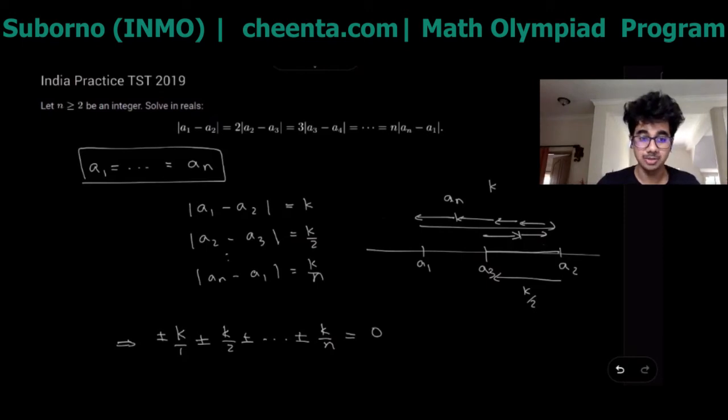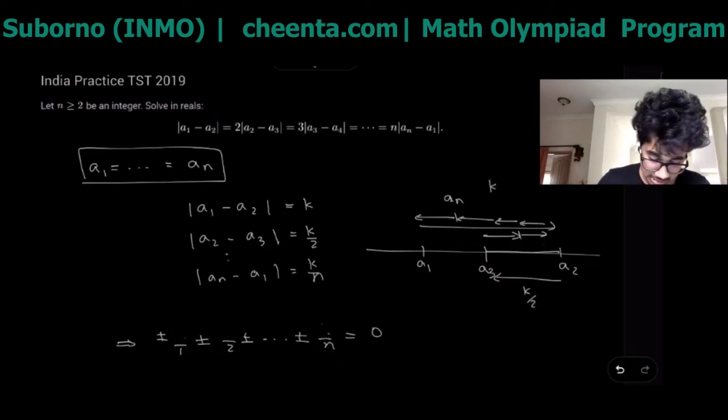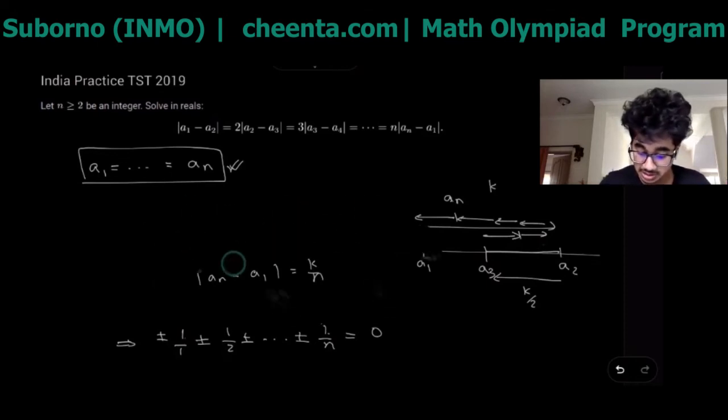If you see what this actually meant mathematically now would be that k, this is plus minus k plus minus k over 2 and so on has to be zero because we begin at a1 and end at a1. This is what we get from all the math we did and this is where we see that this is actually more of a number theoretical problem and not an algebraic problem because everything we are working here is integers. We can cancel out k from everywhere.